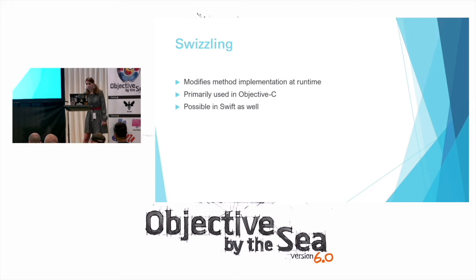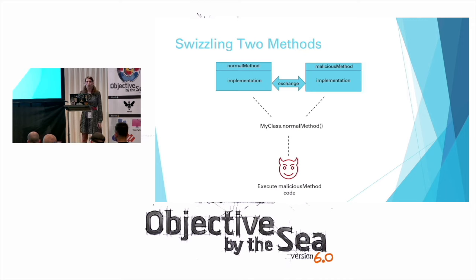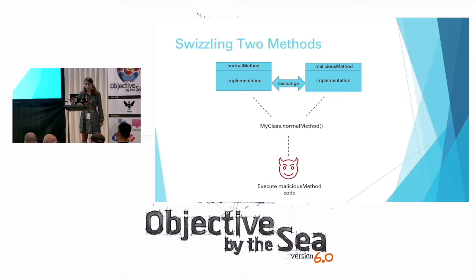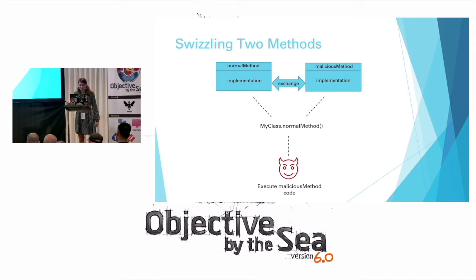What can a malicious actor do with swizzling? They can take multiple methods and dynamically take hooks to those methods, then potentially exchange implementations. A malware author creates a normal method and a malicious method, uses the Objective-C runtime method 'method_exchangeImplementations', gets a handle to the two target methods, and dynamically sets that implementation while the application is running. After the swizzling takes place, every time there is a call to MyClass.normalMethod, the implementation of the malicious method is actually executed instead.